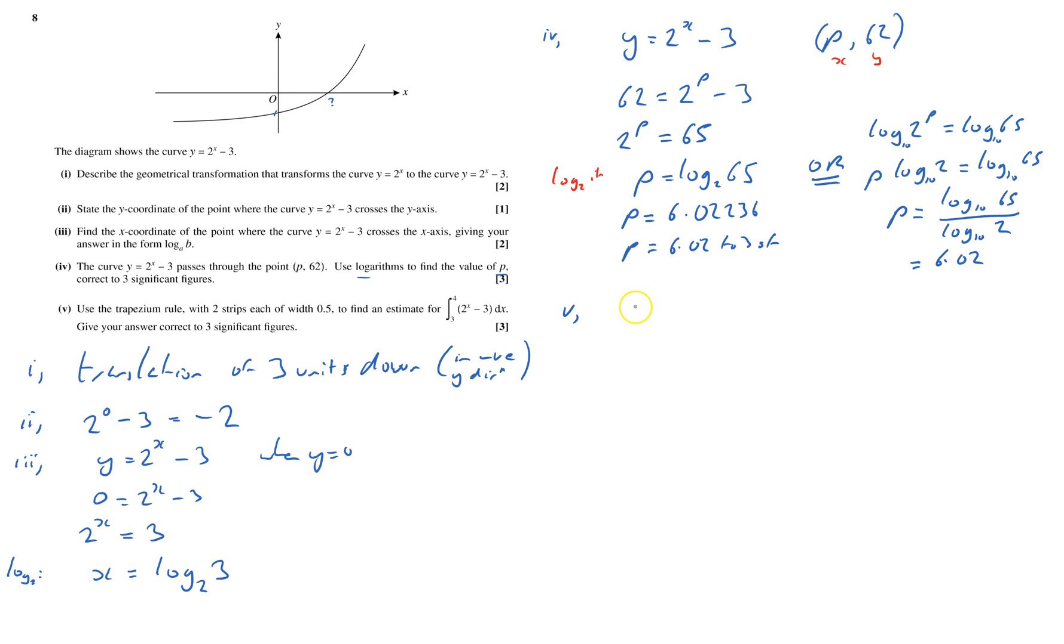Part 5: Use the trapezium rule. Okay, so I need the formula. I'll turn on the formula sheet. I've got 2 strips each of the width of 0.5. So I'm going to go from 3 to 4. So I've got my x values: I need x0, I need an x1, I need an x2. There's got to be 3, 3.5,